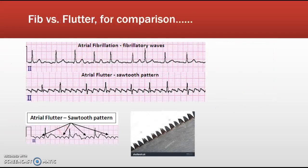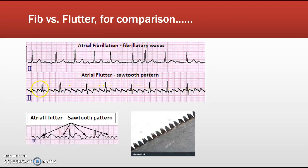Atrial fibrillation and atrial flutter are often categorized together. Atrial flutter can degrade into atrial fibrillation. While you do not need to know atrial flutter for this course, they are treated the same way. Atrial fibrillation has an uneven irregular rhythm with no P waves, while atrial flutter has a beautiful sawtooth pattern. It can still be irregular and oftentimes can degrade into atrial fib, with treatment approached the same way.